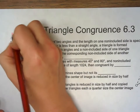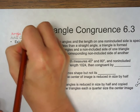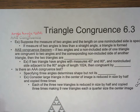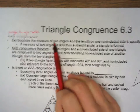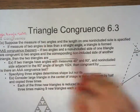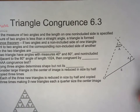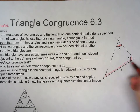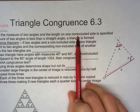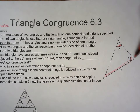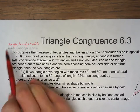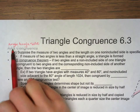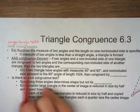AAS is angle-angle-side, and it has to be in that order. Suppose the measures of two angles and the length of the non-included side are specified. The included side is between those two given angles, but in AAS the side is non-included — that's why it's called angle-angle-side, not angle-side-angle. The order here matters.